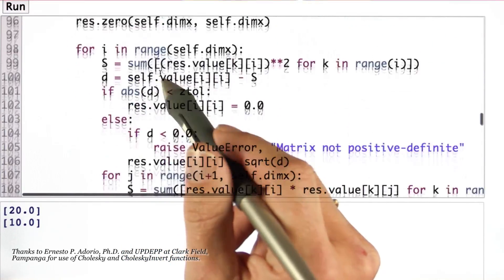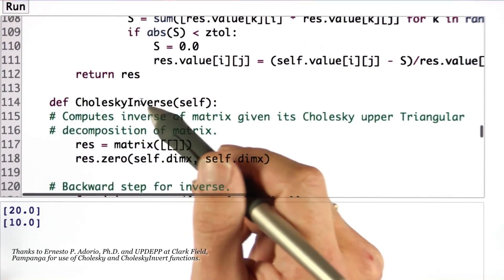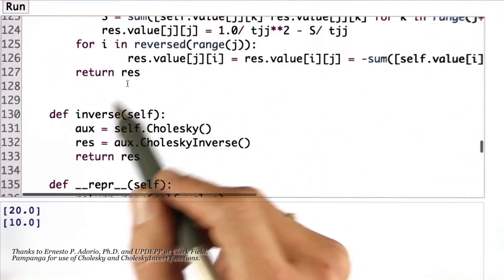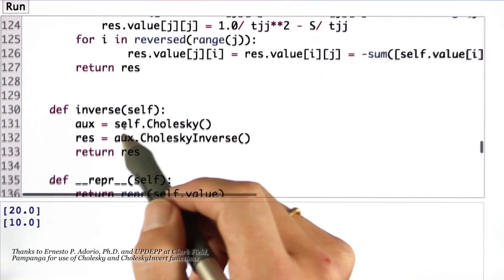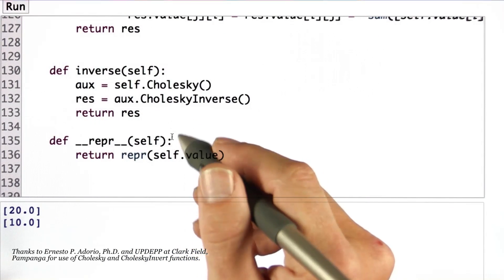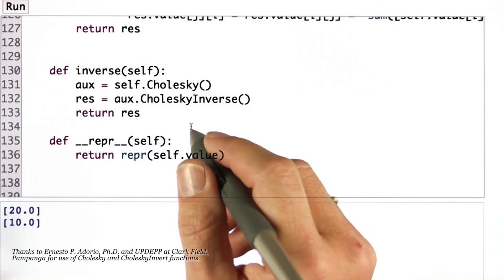In some more extended code, it can actually invert a matrix using Cholesky factorization. There's a function here called inverse. This matrix class is available. It's a small version of what is found in typical libraries.